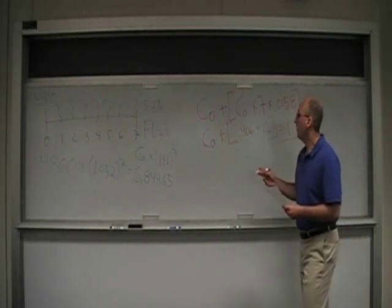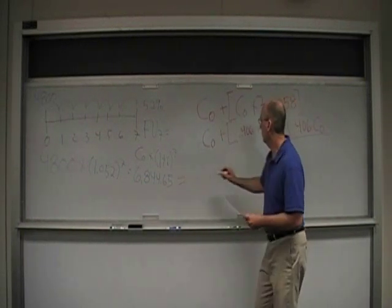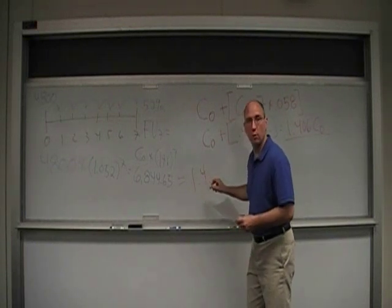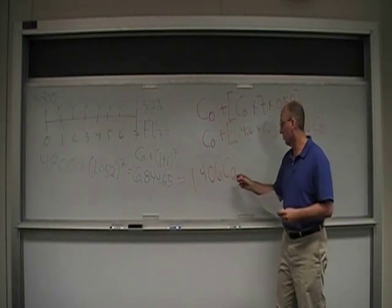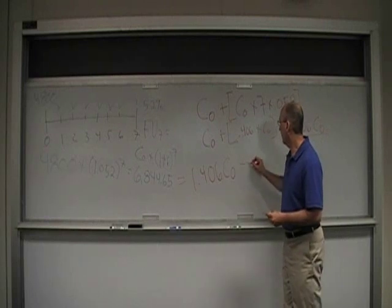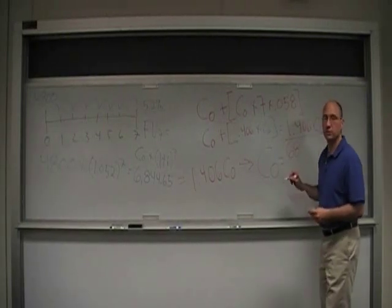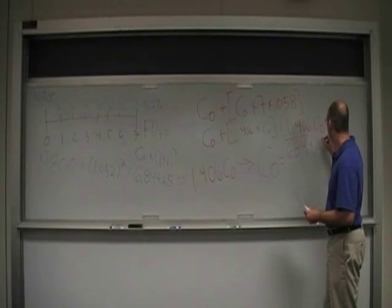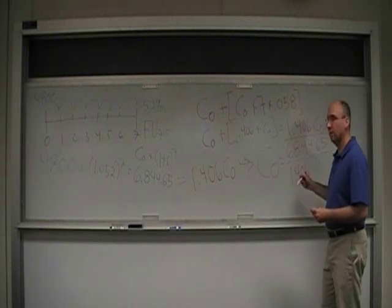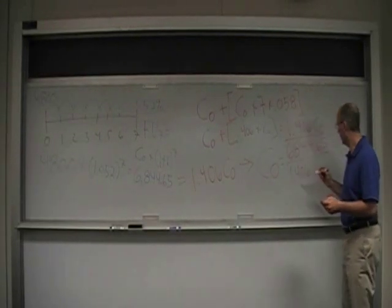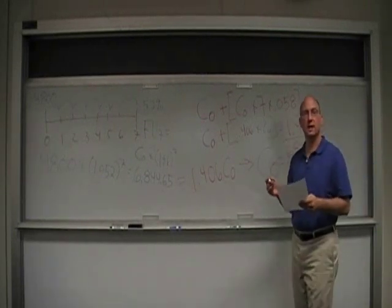Therefore, if in seven years Dang wants to have that much, that is equal to 1.406 times the amount originally invested, which is what we're trying to solve for. So therefore, the amount that Dang should invest today is equal to $6,844.65 divided by 1.406, which comes out to $4,868.17.